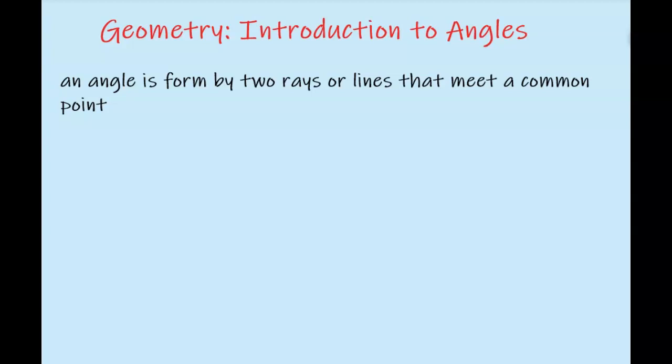An angle is formed by two rays, or two lines, that meet at a common point. So if I have this red line and I also have a blue line, you can realize that the red line and the blue line both meet at this point right here, and because they meet at this point they form what we call an angle.